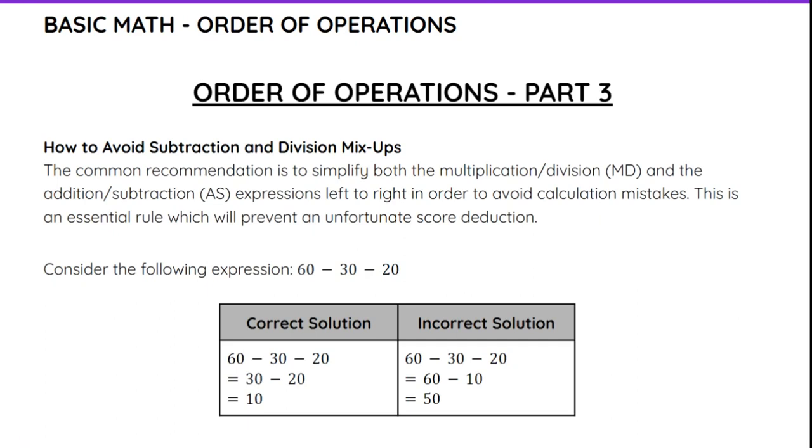To start, I want you to consider the following expression: 60 - 30 - 20. The correct solution is to simplify 60 - 30 from left to right. We do our subtraction first, we get 30, and then we have 30 - 20, which gives us 10.